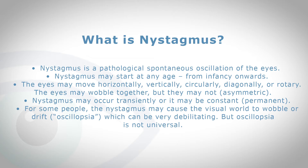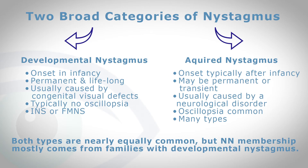Nystagmus can be there all the time, or sometimes it can occur transiently, coming and going. For some people, the nystagmus may cause the visual world to wobble or drift, which we call oscillopsia. Oscillopsia can be very debilitating, but not everyone gets it with nystagmus. There are really two broad categories of nystagmus — developmental nystagmus and acquired nystagmus.